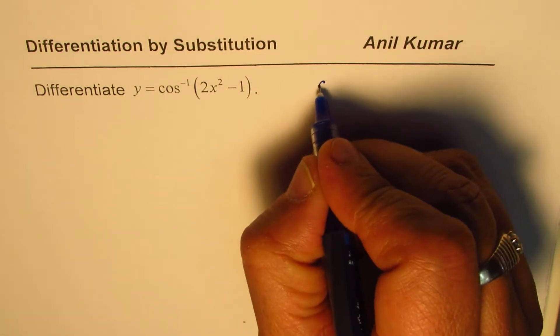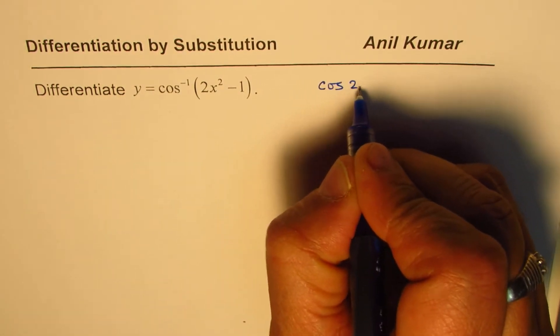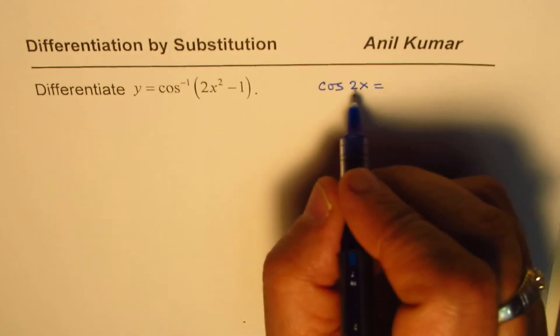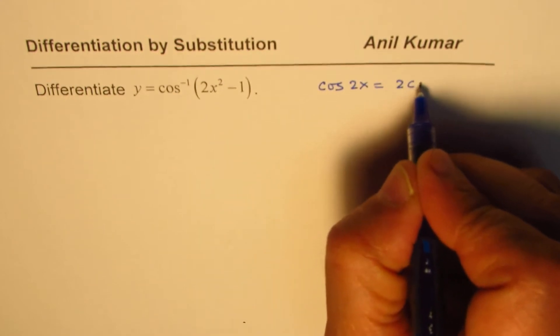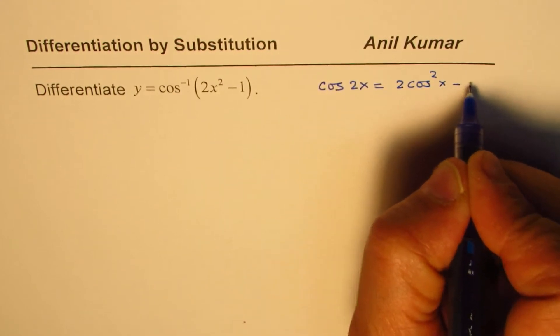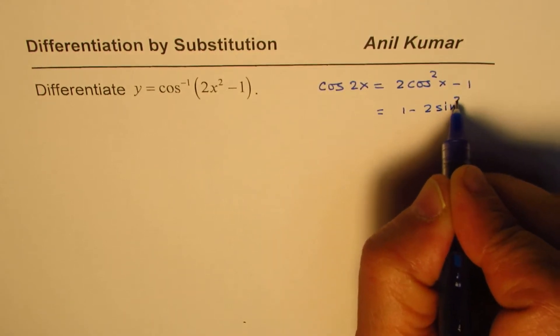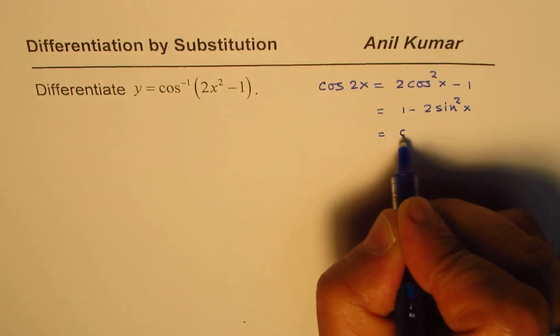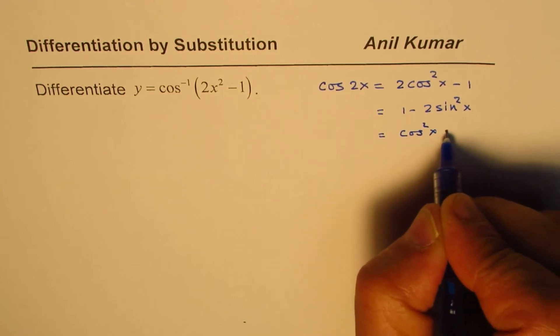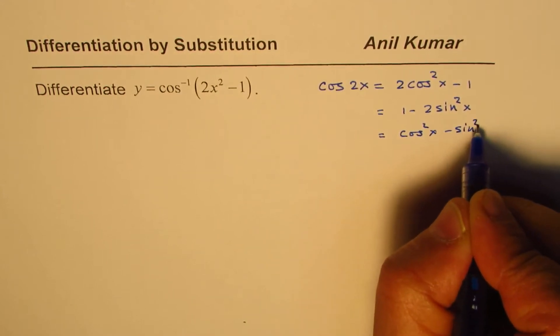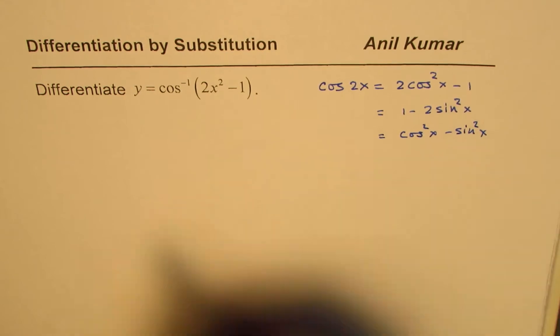For example, the most important formula is cos of 2x. It could be written in different ways. We can write this as 2 cos square x minus 1, we could write this as 1 minus 2 sine square x, and we can also write this as cos square x minus sine square x. So these are different ways in which this formula can be written.